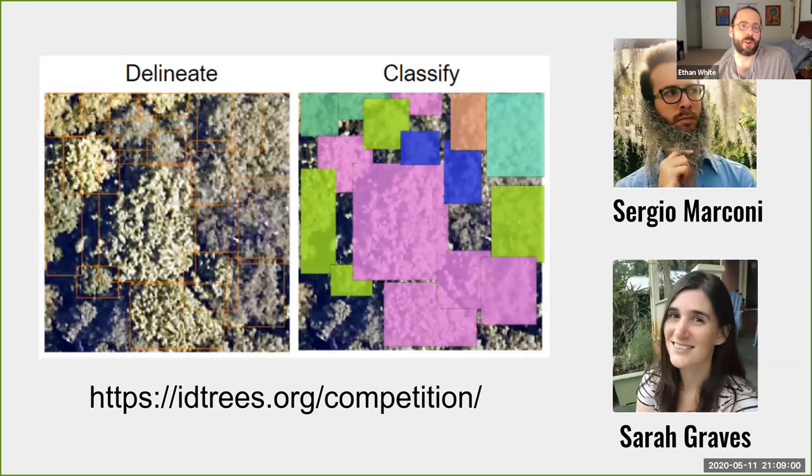One example of this kind of competition is one run by a team that I'm fortunate to be a part of, where the competition is designed to figure out how to find trees in remote sensing imagery and determine what species each tree belongs to. And this work is led by the awesome Sarah Graves and the amazing Sergio Marconi. And the two tasks here, identifying trees and classifying them to species, are already fairly common in remote sensing.